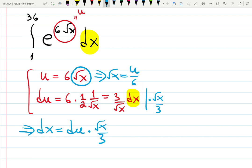u over 6. So now everything can be written in terms of u. dx is du times square root of x, which is u over 6. This is u, and you're dividing by 3 because 6 over 2 gave me 3.